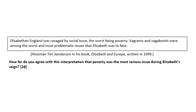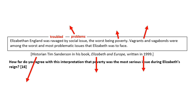Now that we've made our quick notes and underlined the question, we're going to go through this together and make any notes that would help us prepare. Words like 'ravaged' and 'social issue' we might want to substitute for words we're more familiar with. We'll need to consider the potential problems Elizabeth was facing, what the issue of poverty was, what we know about vagrants and vagabonds, the fact that Tim Sanderson is a historian, that it's written in a book called Elizabeth in Europe, and the fact it was written in 1999.